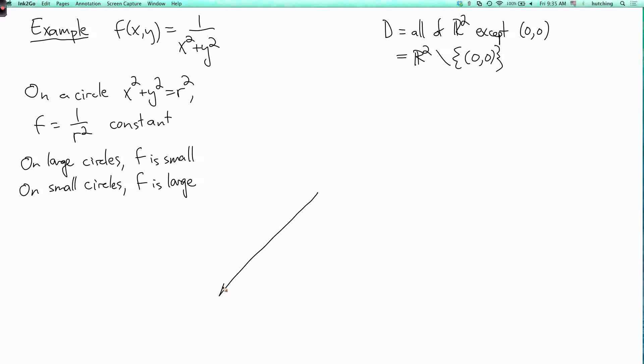So the graph is going to look like this. Let's draw the surface in red. It's going to look something like this. So over a circle of radius r in the xy plane, we have a circle whose height is 1 over r squared in the graph. And as we go away from the origin in the xy plane, f goes to 0. And as we go towards the origin, f gets arbitrarily large, and that's why it fails to be well defined at the origin.